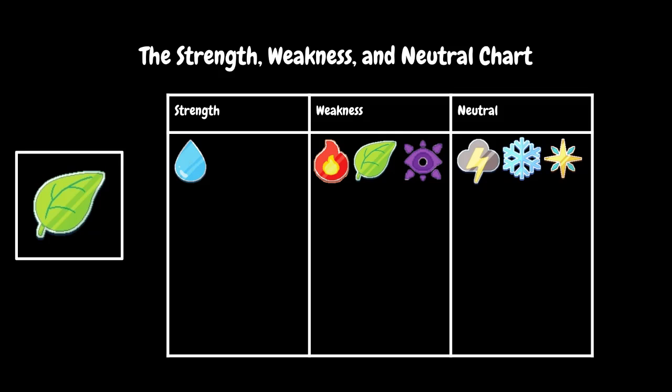Plant's Strength is against Water. Its Weakness is against Fire, itself, and Shadow. It's Neutral against Storm, Ice, and Astral.